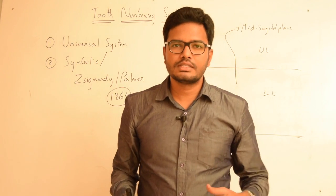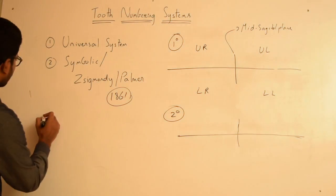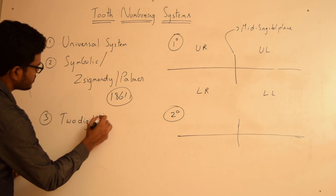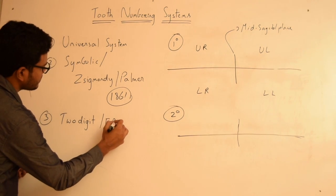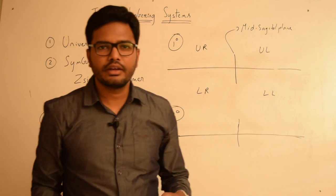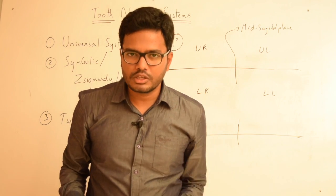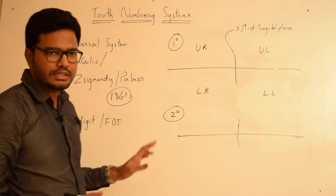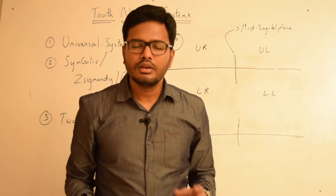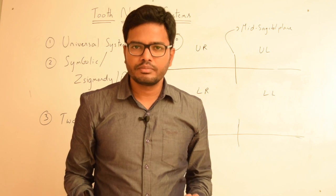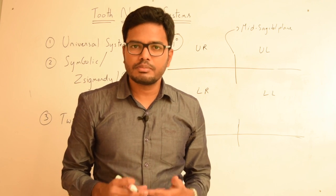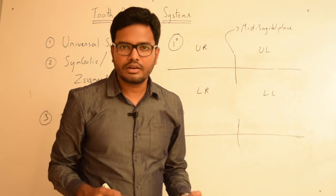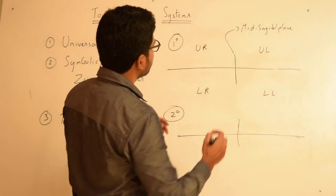Now let's see the two-digit system, also called the FDI system. It was introduced by the FDI — Federation Dentaire Internationale — and was accepted by the WHO, the World Health Organization. According to this two-digit system, as the name indicates, we have two digits: the first digit represents the quadrant and the second digit represents the particular tooth.